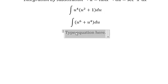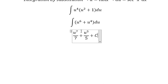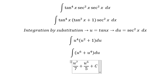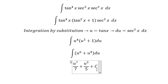The integral of u to the power of 6 gives u to the power of 7 over 7, plus u to the power of 5 over 5. Substitute back u equals tan x.